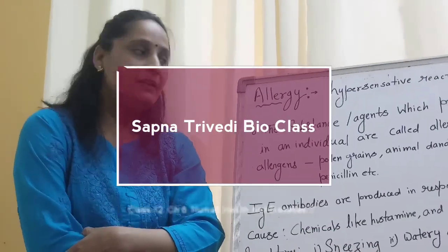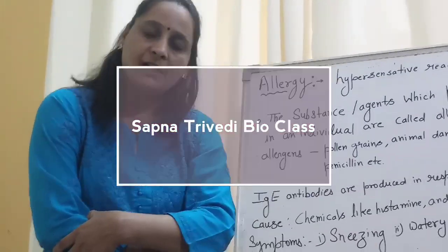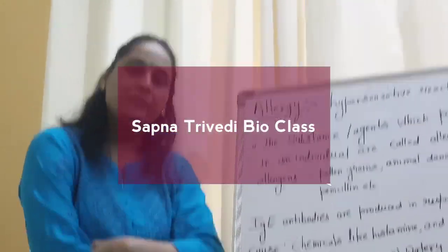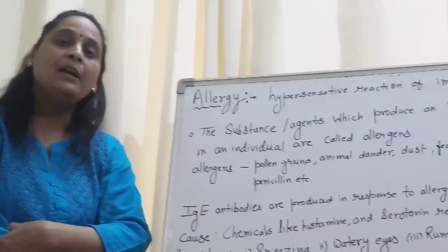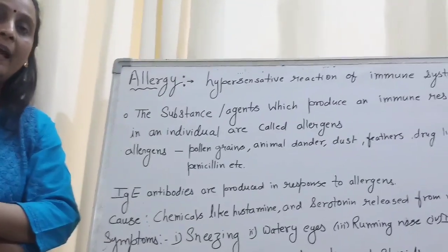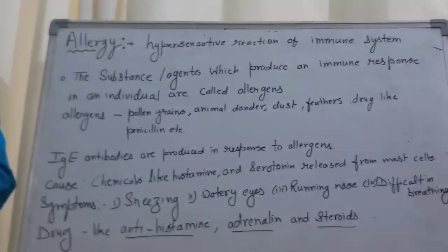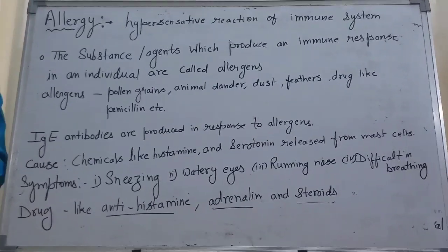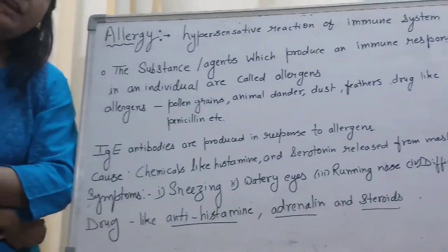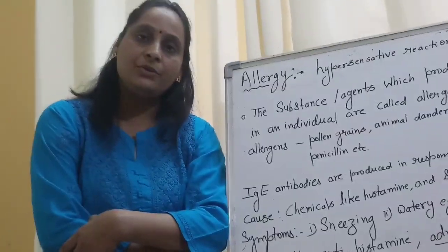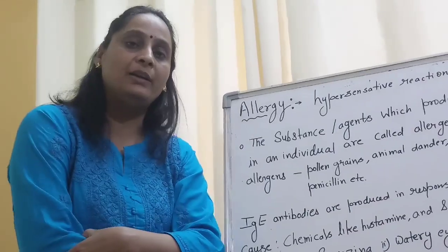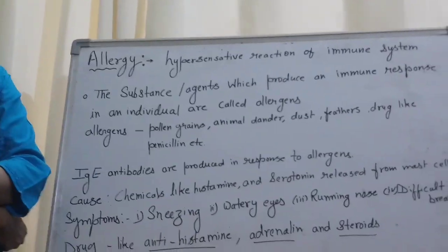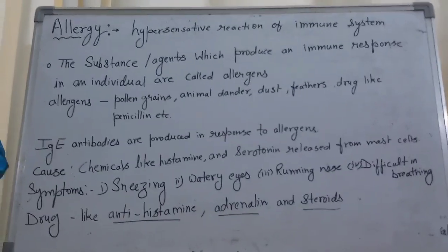Hello students, welcome to your biology class. I am Sapna Krivedi. Students, we have discussed about immunity, their types of immunity — passive, active immunity — and there is a vaccination program. Today we are going to start allergy and autoimmunity, some important points, and there is a lymphoid system also.